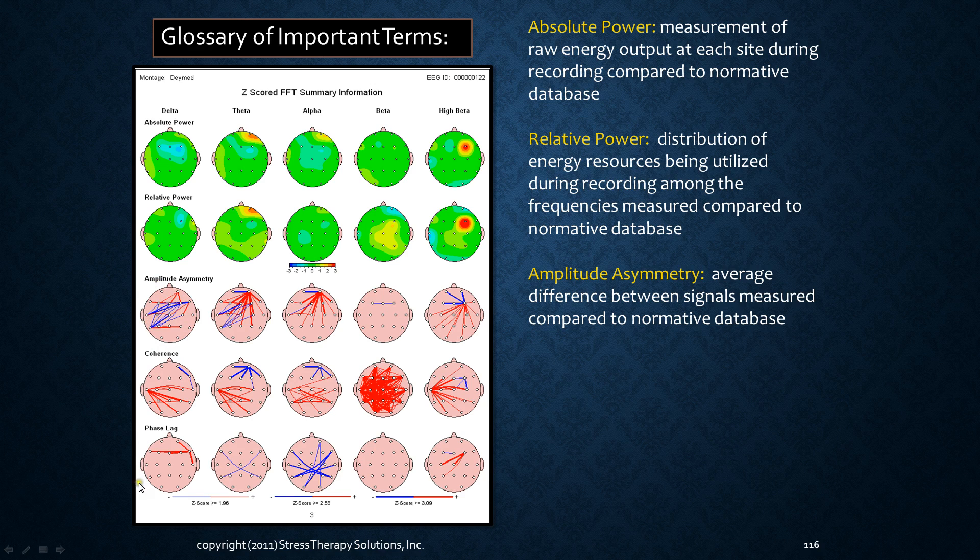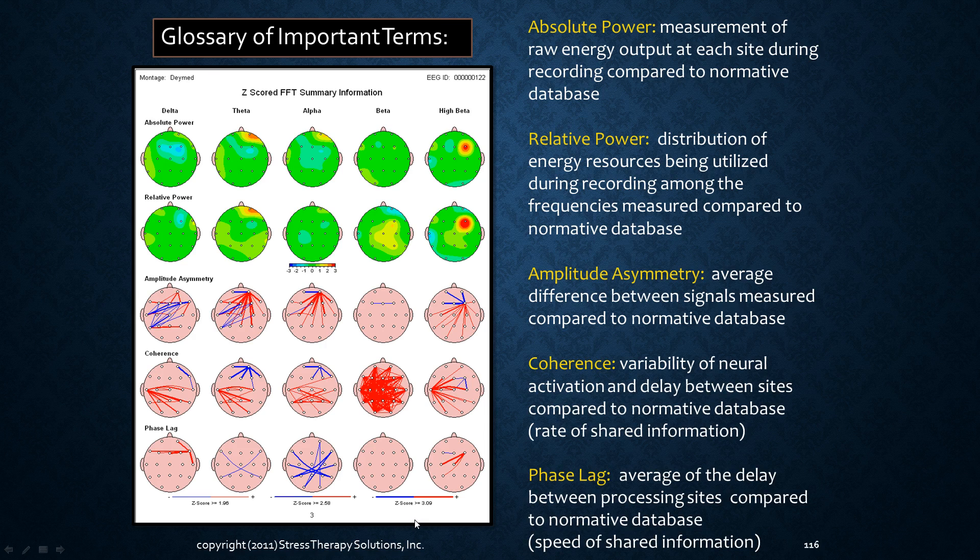All of these lower pictures down here are talking about sharing of information and resource allocation and resourcing in the brain. So if you see any lines down here, it's telling us that something's less efficient than it could be. When we look at coherence and phase lag, coherence is a variability of neural activation and delay between sites compared to the normative database. So it's telling us about the rate of shared information. So it's telling us basically how these parts of the brain are sharing information with each other.